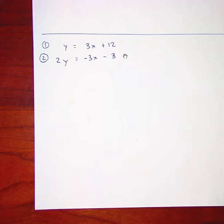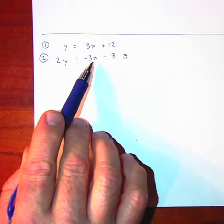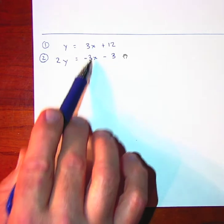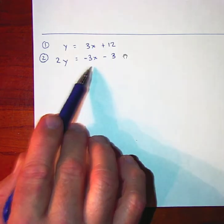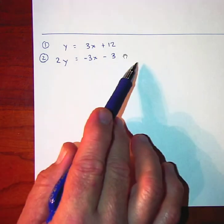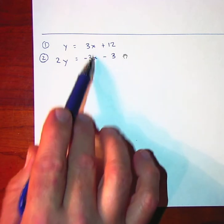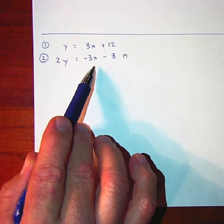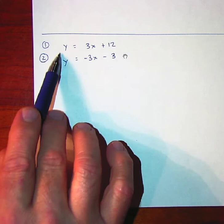Can you look at these two equations and solve for the variables without writing anything down? You'll notice here you have a 3x and a negative 3x. If you were to add the two equations together, the 3x and the negative 3x would go away. What would you be left with?